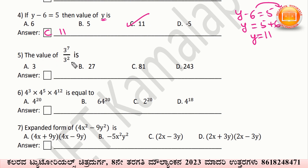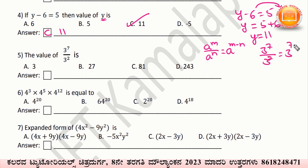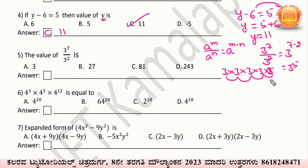Now observe the value of 3 to the power 7 divided by 3 to the power 2. The law of indices says aᵐ divided by aⁿ equals a to the power m minus n. So 3⁷ divided by 3² equals 3 to the power 7 minus 2, which gives 3⁵. Multiplying 3 five times: 3, 9, 27, 81, 243. Option D — 243 — is the correct answer.